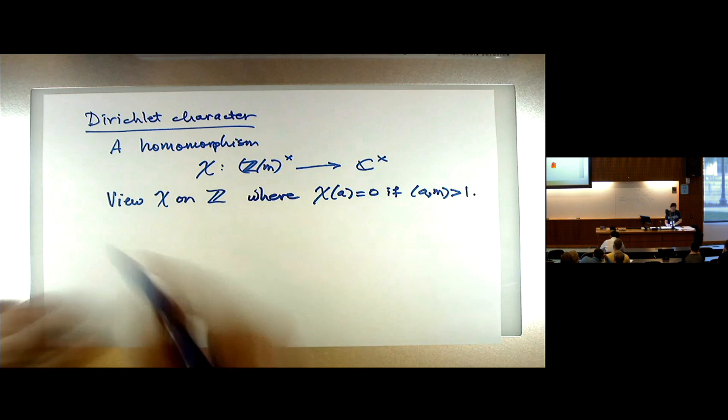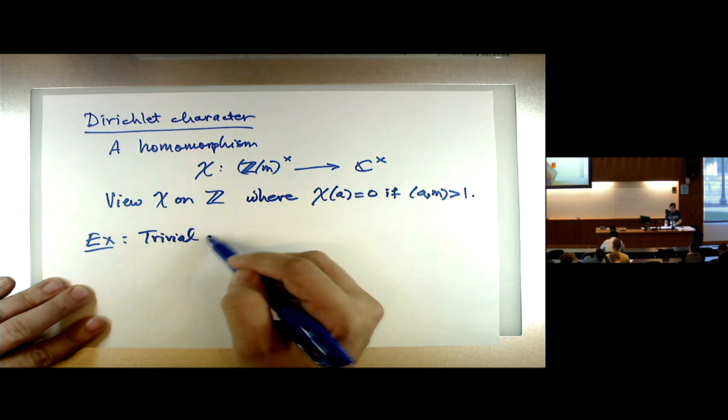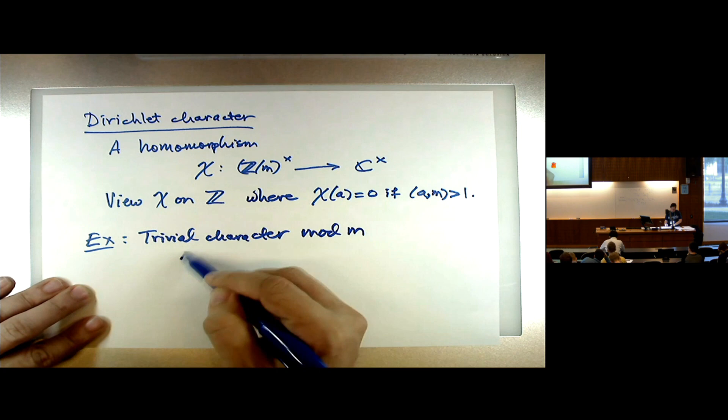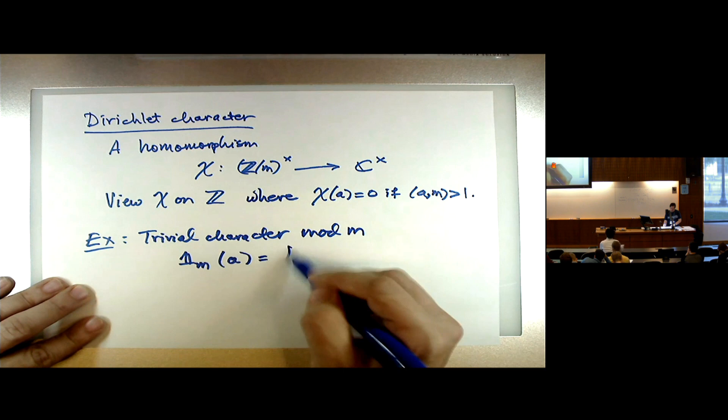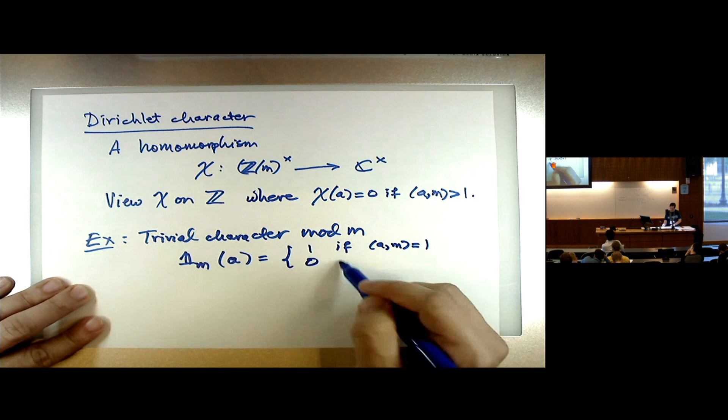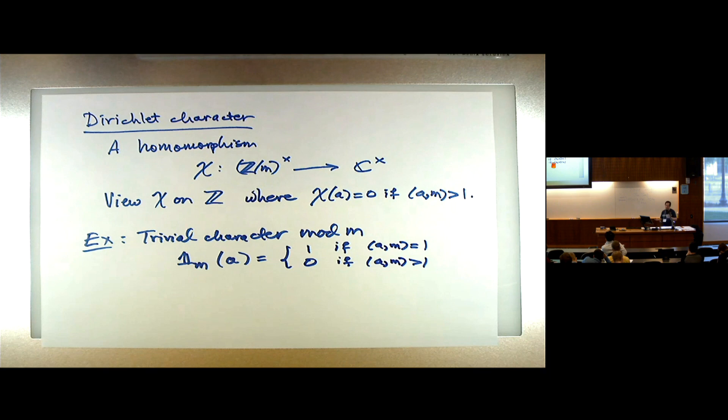This keeps χ totally multiplicative even as a function on the integers. Here are some examples. The trivial character mod m, which I'll call 1_m: its value is 1 if a is relatively prime to m and 0 if a is not relatively prime to m. The simplest is the trivial character mod 1, which is identically 1. The trivial character mod 2 will be 1 on odd numbers and 0 on even numbers.